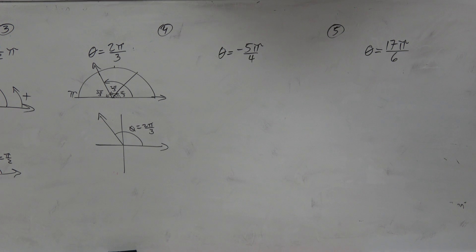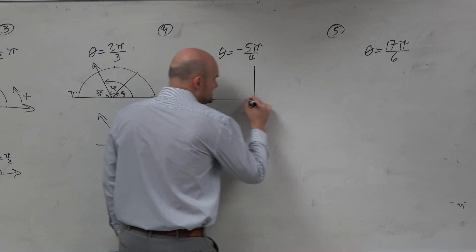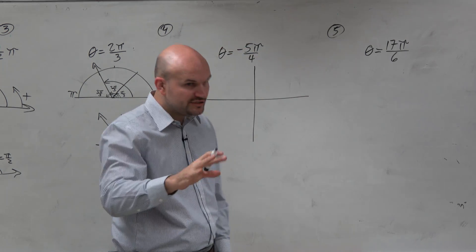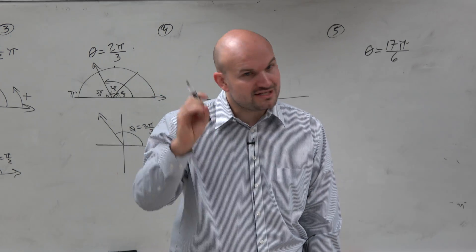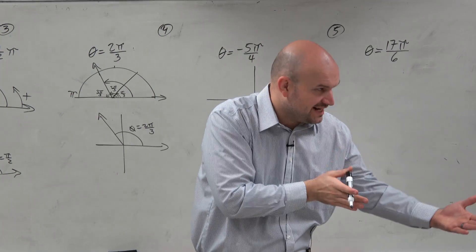This brings us to the next one, which is the negative values. So negative, remember guys, is direction. That's all I need you to think about. Negative means direction, right? You walk five miles positive direction or walk five miles negative direction.